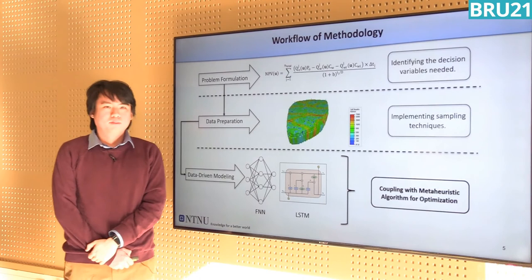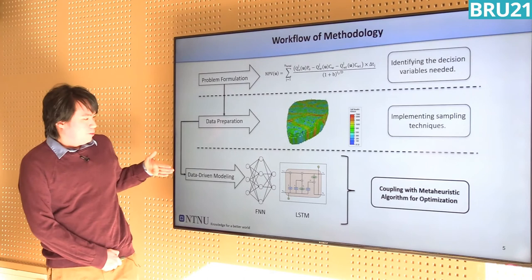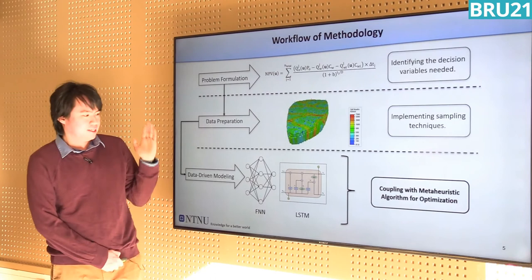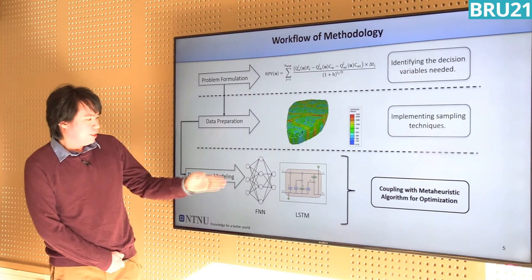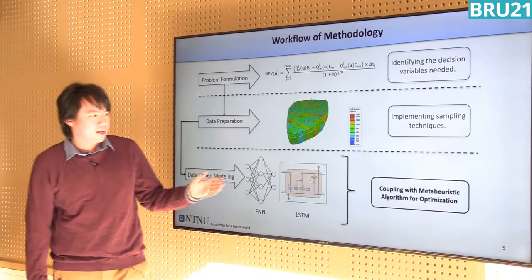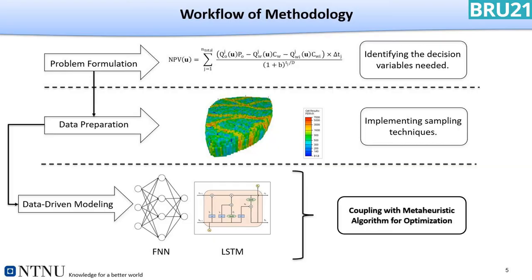After preparing the data, we feed it into the machine learning models — in this case, artificial neural networks. After the data-driven modeling is done and if it shows good results, we couple it with a meta-heuristic algorithm. We have chosen particle swarm optimization to perform this optimization task. This is the general idea of the whole workflow implemented in this work.